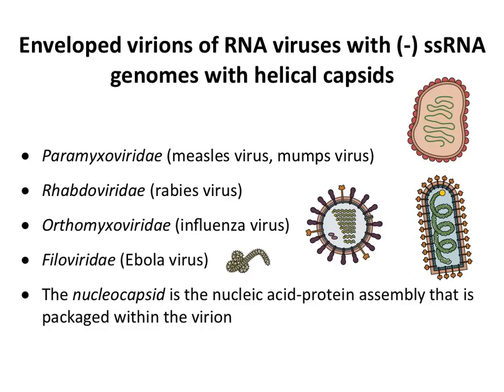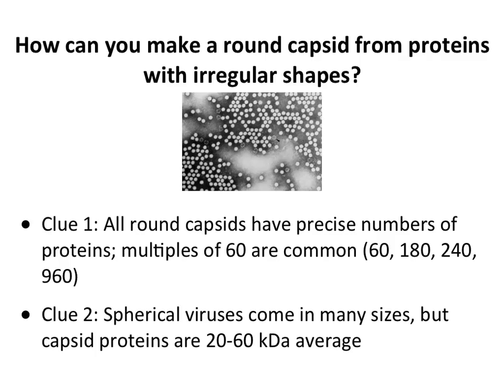Here are some examples of animal viruses with helical nucleocapsids. They all have an envelope; inside is the genome bound to one protein in the helical fashion we've been discussing. Measles virus, rabies virus, influenza virus, and Ebola virus all have genomes arranged as a nucleocapsid with helical symmetry, packaged within the envelope virus particle. None of the animal viruses with helical symmetry have naked helical genomes — they all have an envelope. Even some spherical viruses like influenza have helical nucleocapsids.